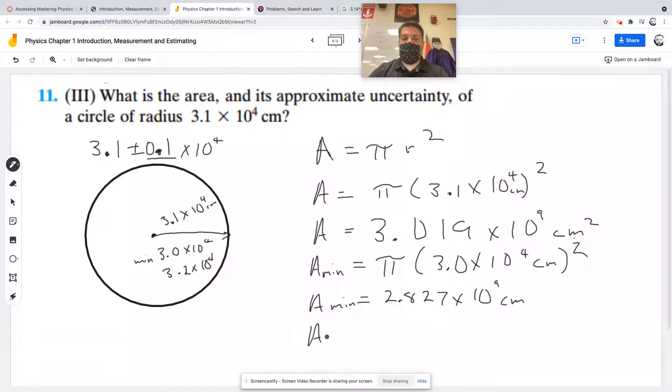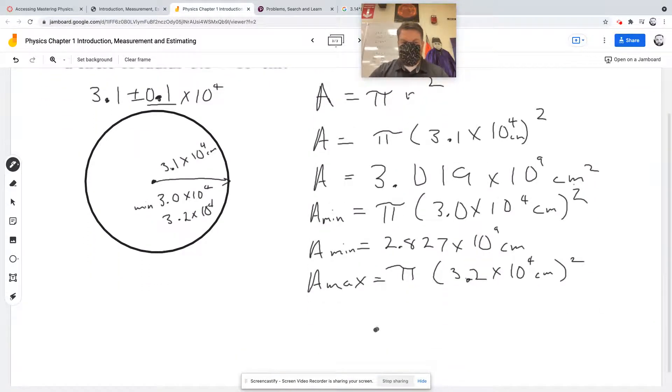Now the maximum area: same formula but with radius 3.2 times 10 to the 4th. Plugging into the calculator gives 3.217 times 10 to the 9th centimeters squared.